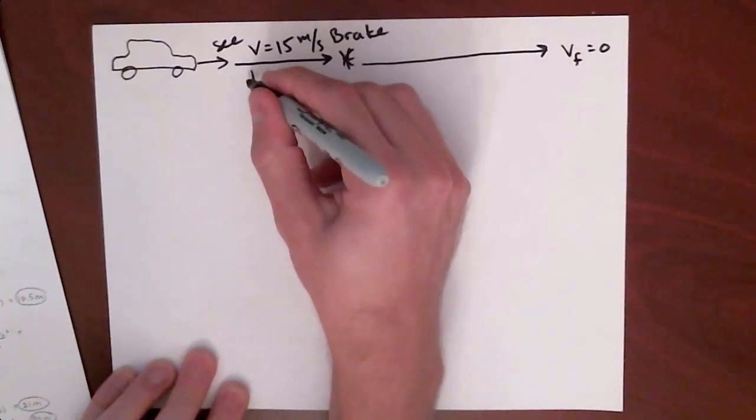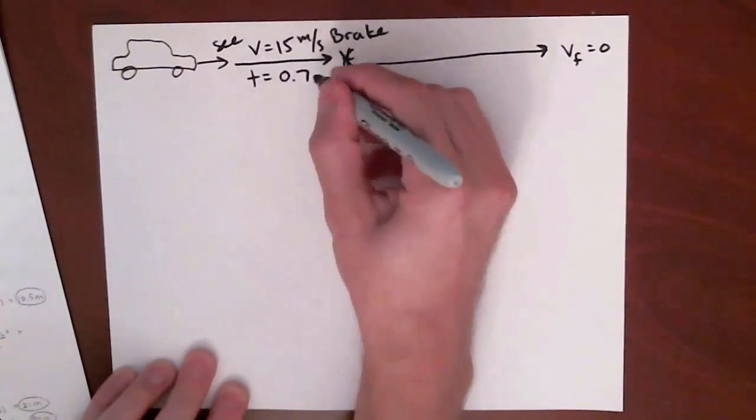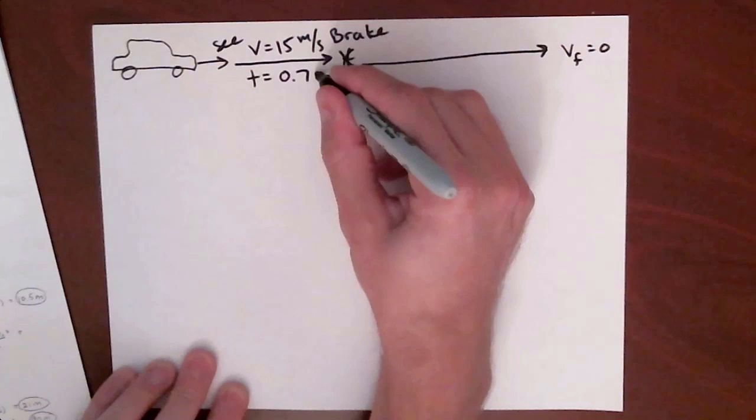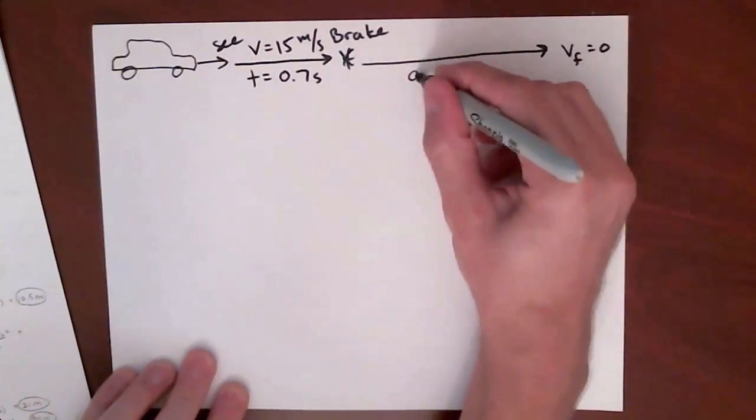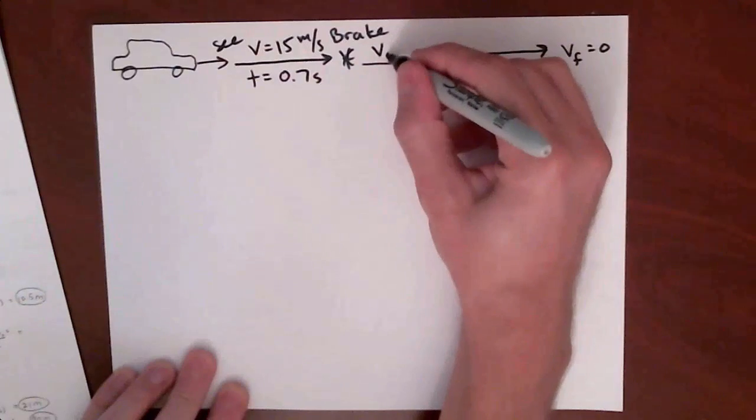Now, initially we're going at 15 meters per second, and the reaction time is 0.7 seconds. We accelerate negative 5 until we stop.